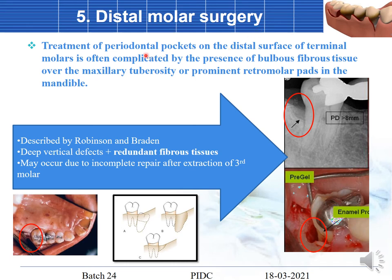The last procedure is distal molar surgery — treatment of the distal surface of terminal molars when there are periodontal pockets. This is often complicated by bulbous fibrous tissue over the maxillary tuberosity or the prominent retromolar pad. This technique was developed by Robinson and Braden mainly when there is a combination of deep vertical defects and redundant fibrous tissue. It may occur due to incomplete repair after extraction of third molars — leading to pocket formation at that site.